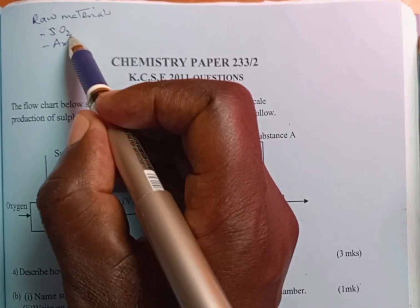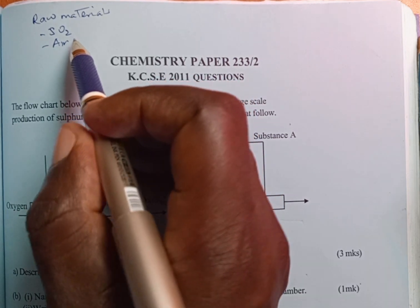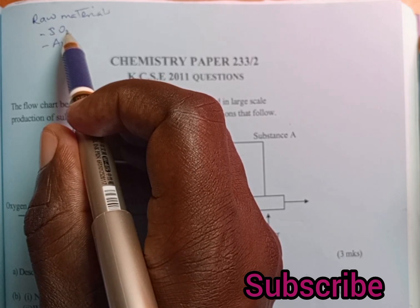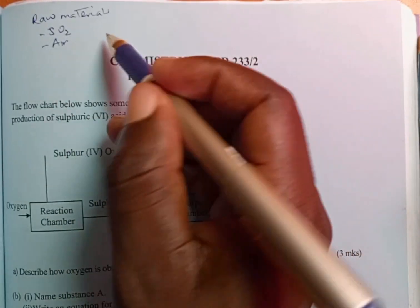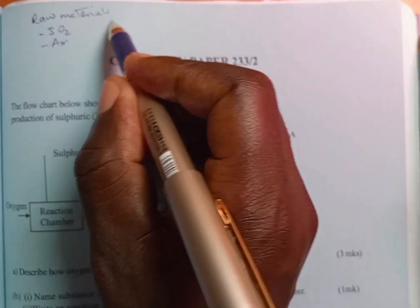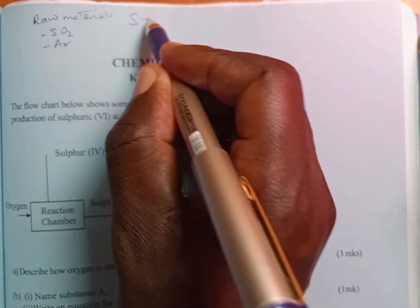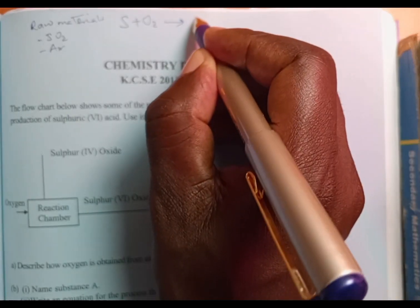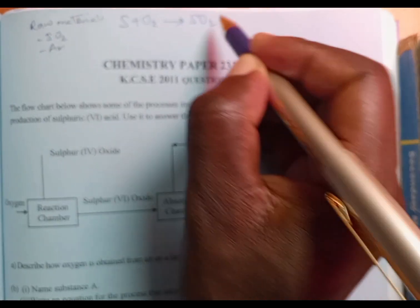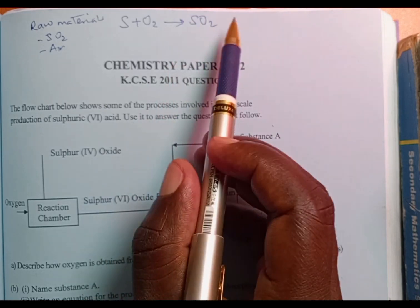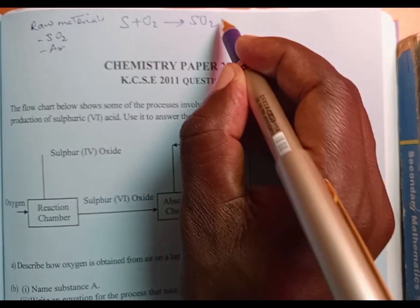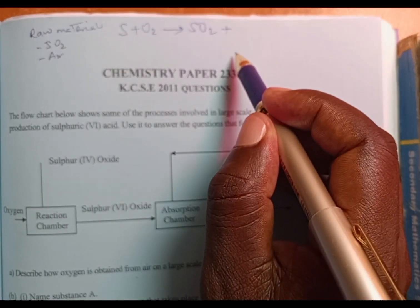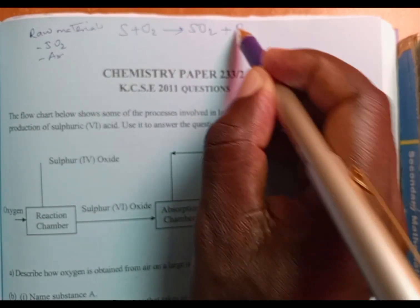This sulfur dioxide is obtained by burning sulfur in air to obtain sulfur dioxide. We take sulfur, burn it in air to give us sulfur dioxide gas. Then sulfur dioxide gas is reacted with more air to produce sulfur trioxide.